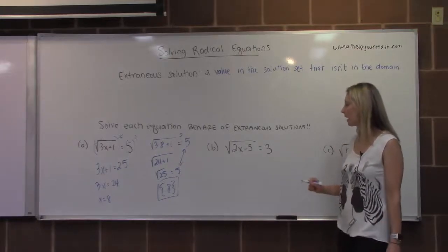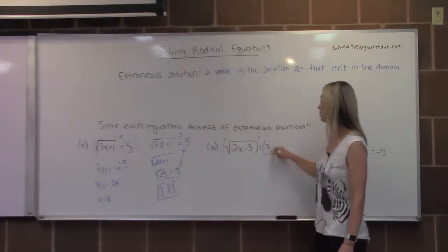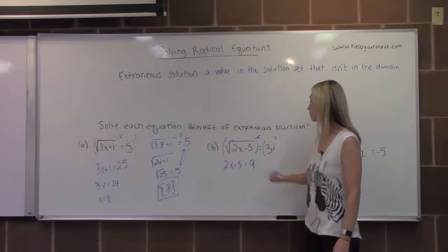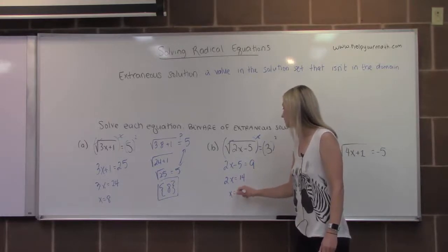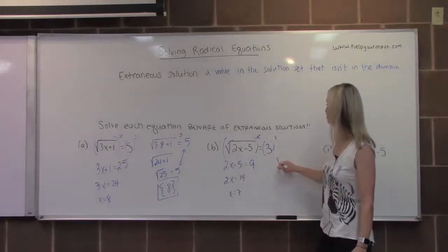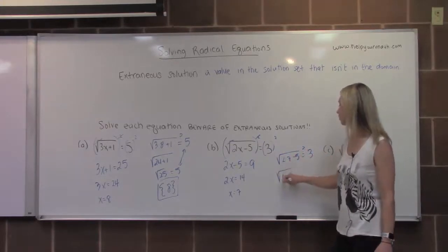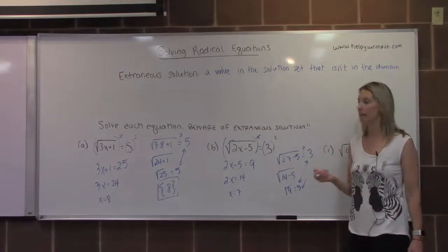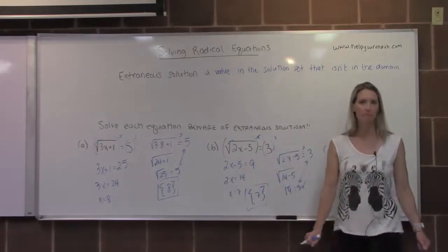For letter B, we have the square root of 2x minus 5 equals 3. I'll square the entire left-hand side and right-hand side to clear the radical, giving us 2x minus 5 equals 9. Solving: 2x equals 14, so x equals 7. To verify: does the square root of 2 times 7 minus 5 equal 3? Two times 7 is 14, minus 5 is 9, and the square root of 9 is 3. It works — so 7 is the solution.